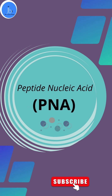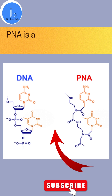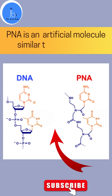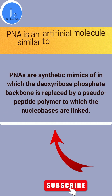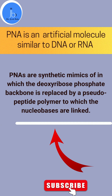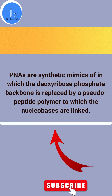In this session we're going to discuss peptide nucleic acid, which is an artificially synthesized polymer similar to DNA and RNA. PNA binds to homopurine DNA, displacing the homopyrimidine DNA strand. The deoxyribose phosphate backbone is replaced by a pseudo-peptide polymer to which the nucleobases are linked.